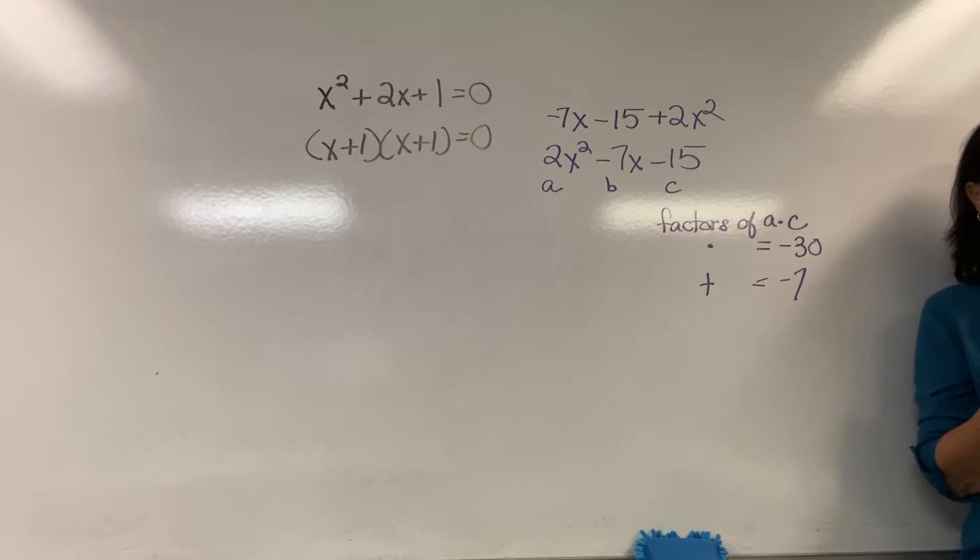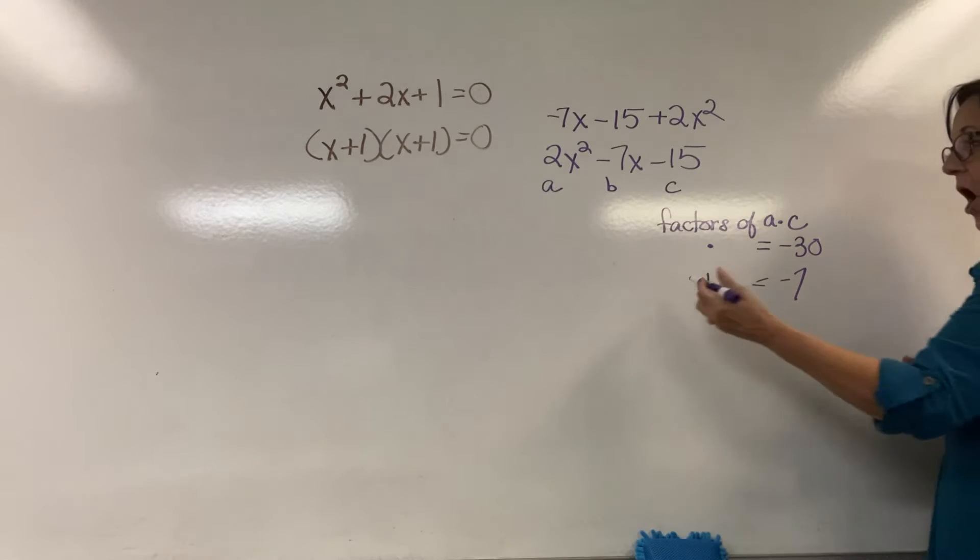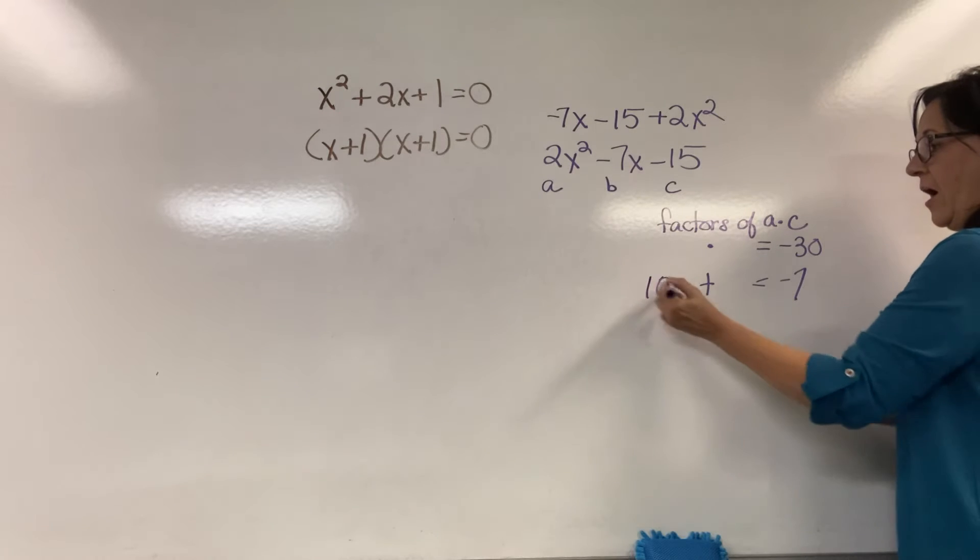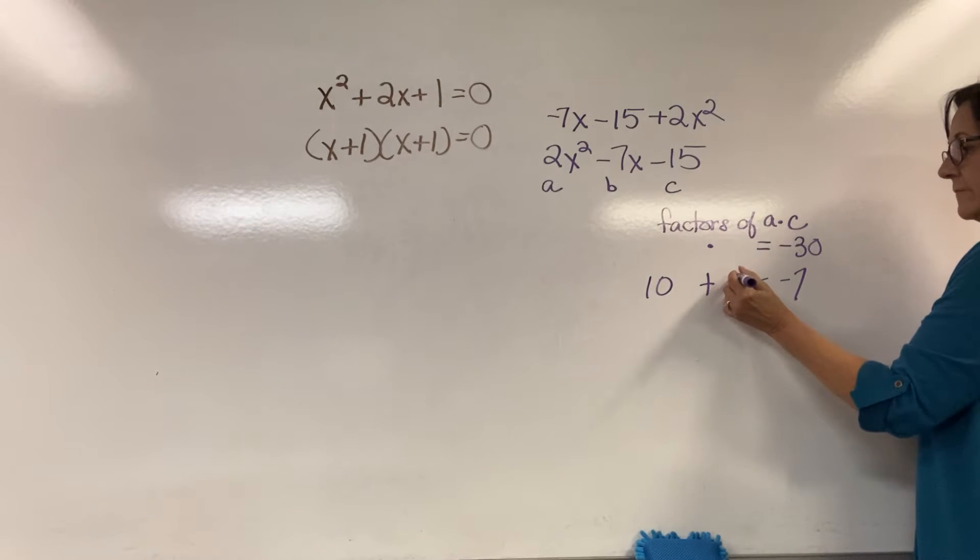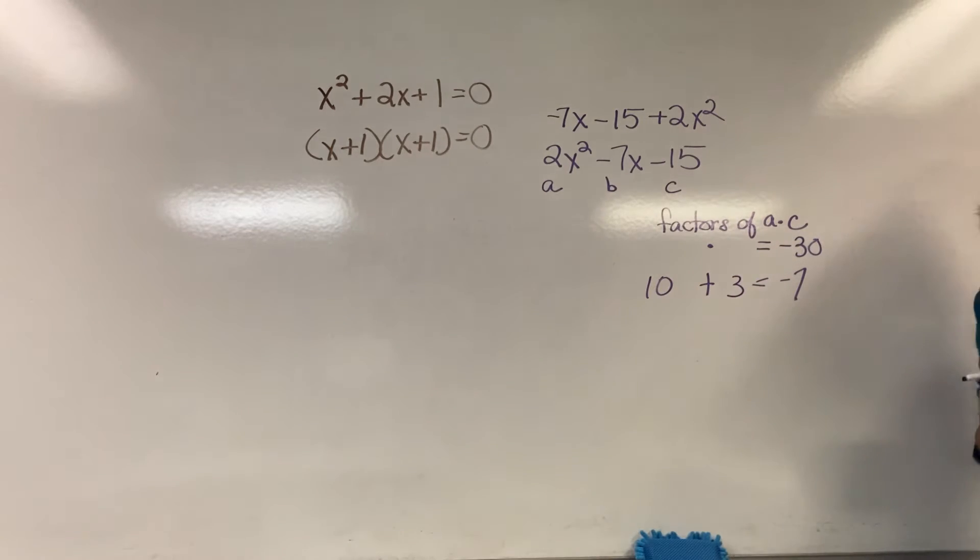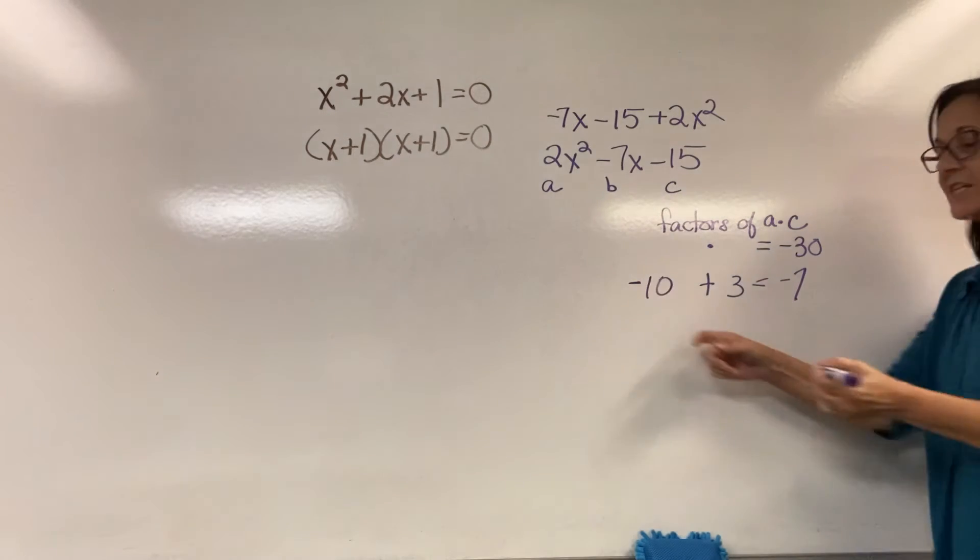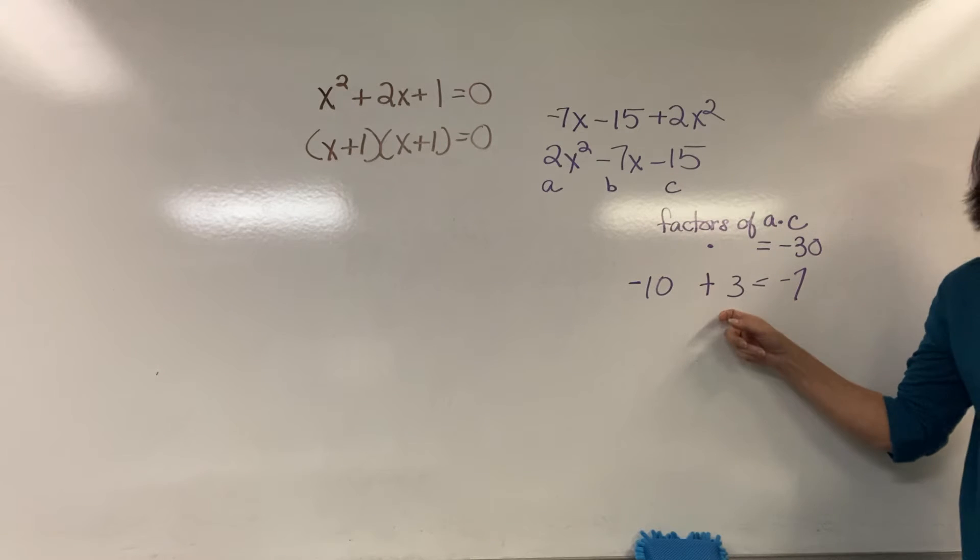What are factors of negative 30 such that I add them and the result is negative 7? 1 times 30, can I ever get to negative 7? 2 times 15, can I ever get to negative 7? 3 times 10. It would be negative 10 and 3. The 10's going to be negative and the 3's going to be positive.